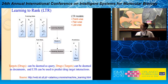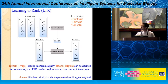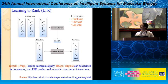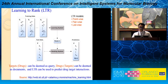A lot of learning-to-rank methods have been proposed. They are roughly divided into three categories: point-wise, pair-wise, and list-wise. We can also use learning-to-rank methods to model the drug-target interaction prediction problem. For example, targets can be treated as queries and drugs can be treated as documents. Then, learning-to-rank methods can be used to predict drug-target interaction.